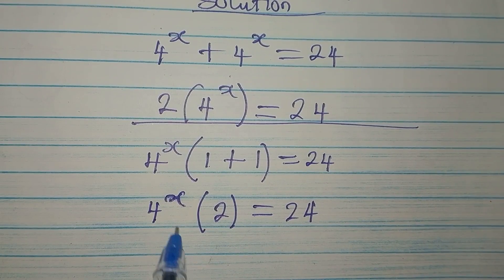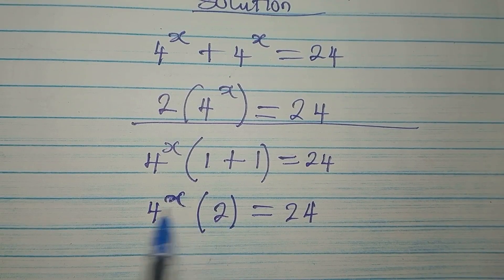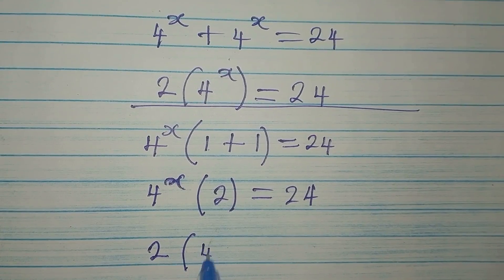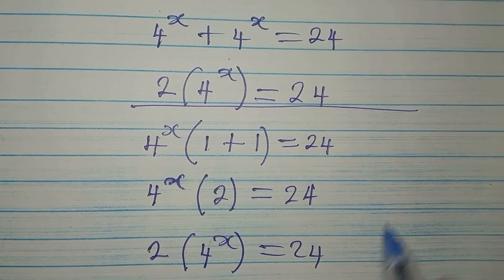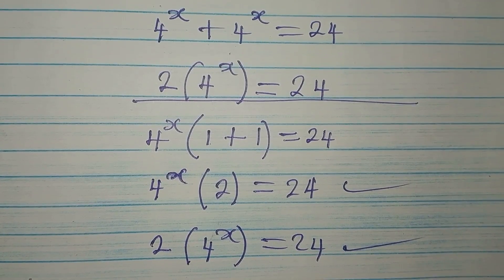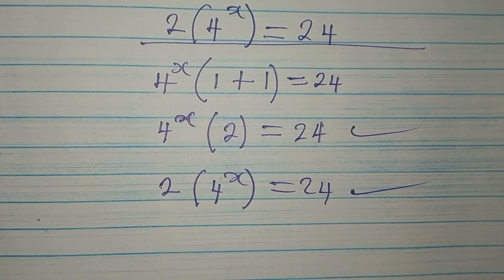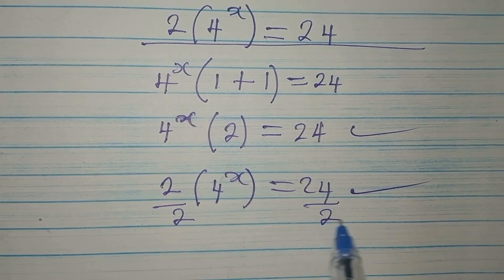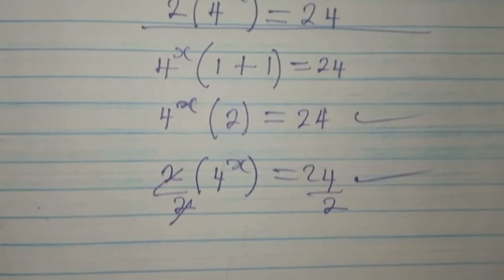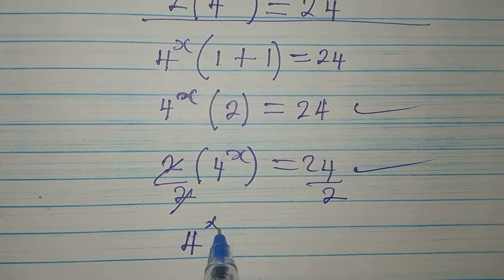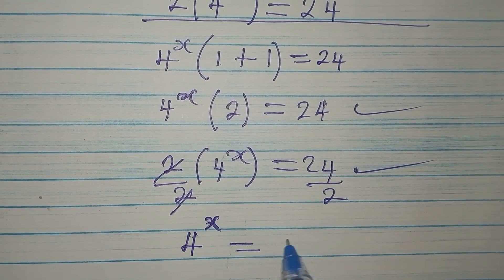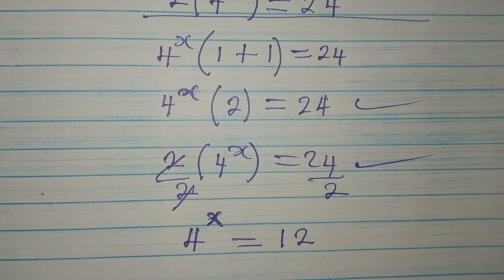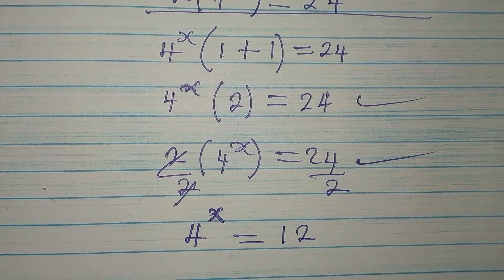It doesn't matter if you write this first — it was 2 times 4 to the power of x equals 24. These are the same thing. Let's divide both sides by 2 so that we now have 4 to the power of x equals 24 divided by 2, which is 12.